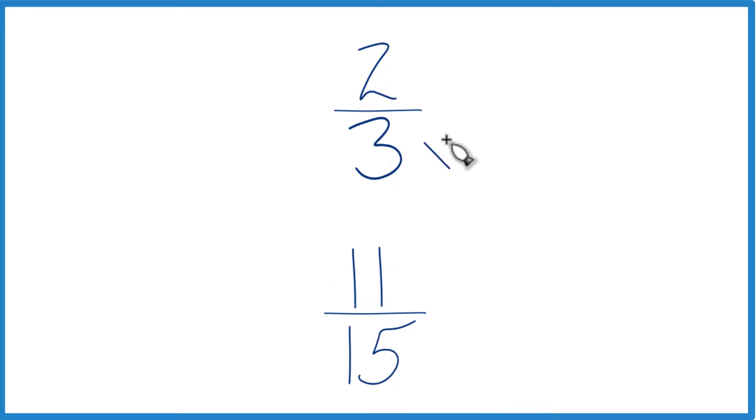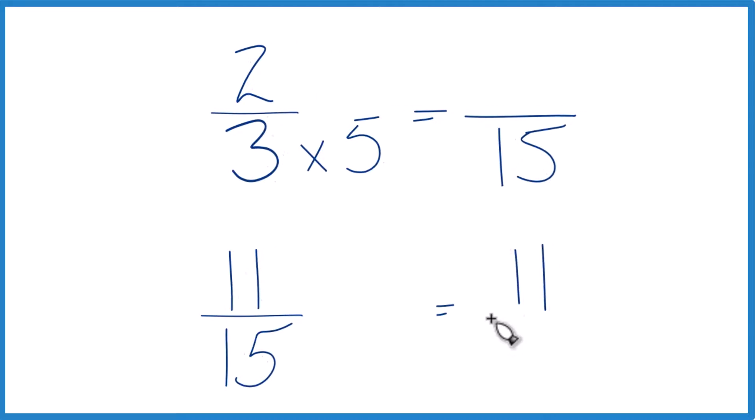How about 3 times 5? Because that would give us 15. And down here we already have 15, so let's just keep that as 11/15.